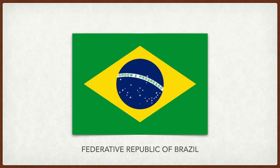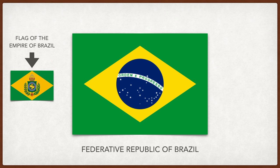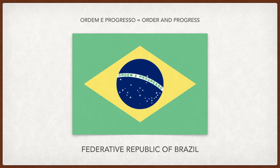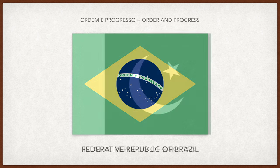Brazil. The green and yellow were taken from the imperial flag, the royal colors of the first emperor of Brazil after independence from Portugal. The 27 stars represent the 26 states plus the federal district, and their position on the flag is supposed to be the position of stars over Rio de Janeiro on November 15th, 1889, when Brazil became a republic.